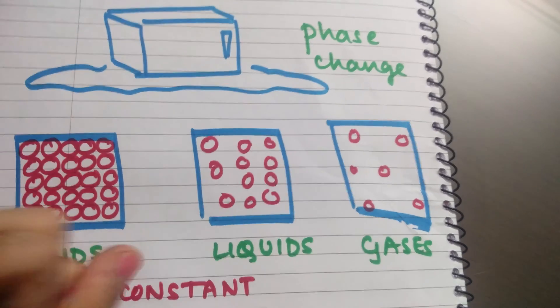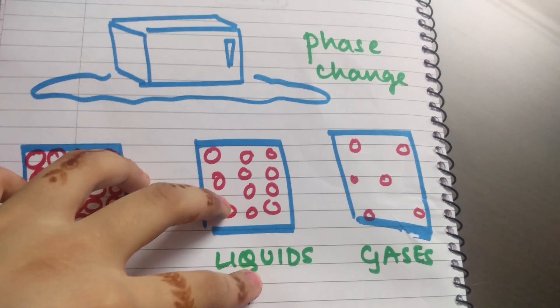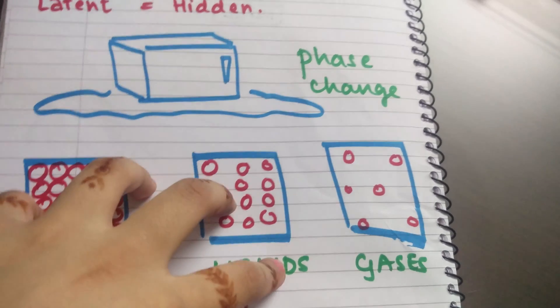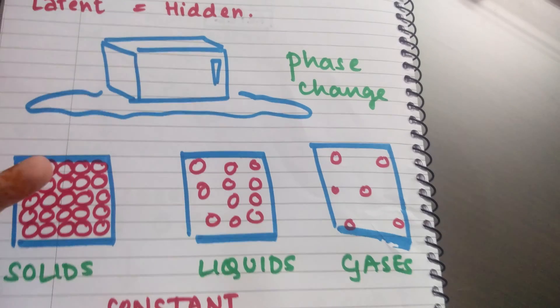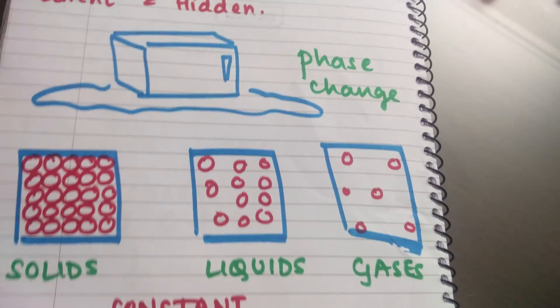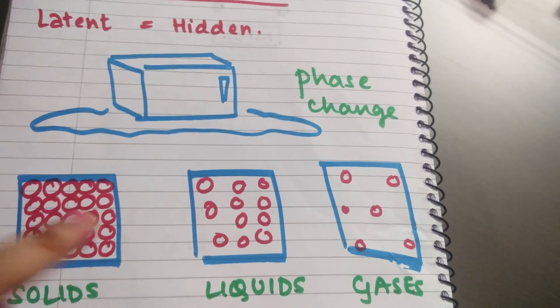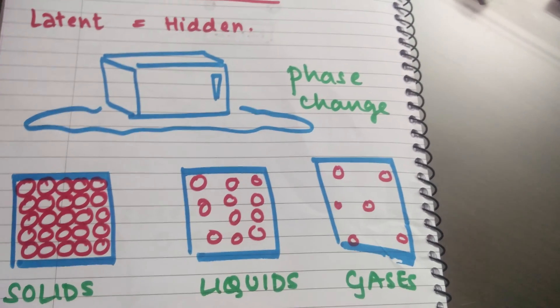If I'm trying to form a liquid out of it, I need to separate them out, and I need to apply a force that is going to be opposite to this intermolecular force of attraction. I have to overcome this, so all the heat that I apply is going to be used up to separate these out against the intermolecular force of attraction.